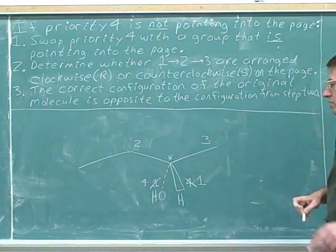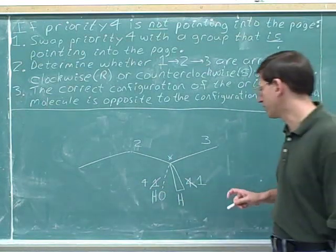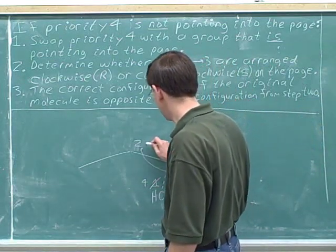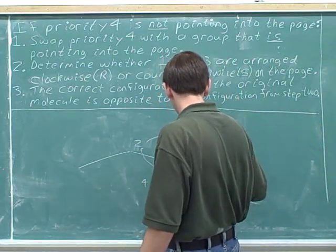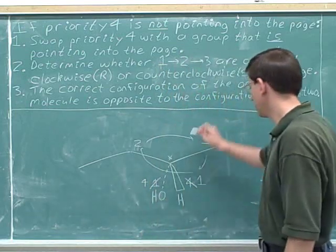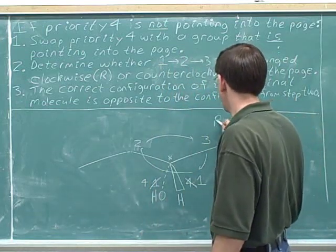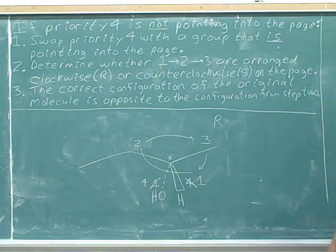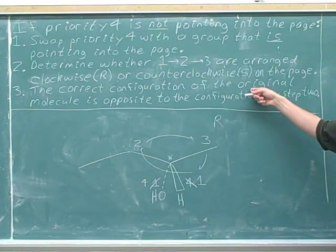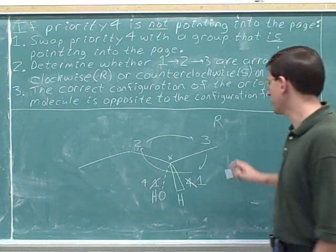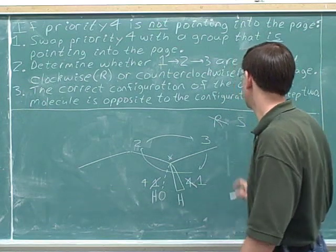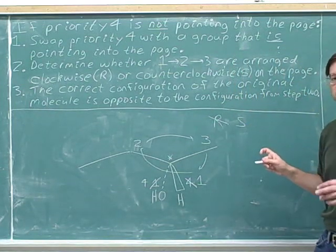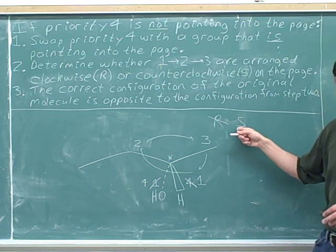Step two: what's the configuration of one to two to three on the page? One to two, two to three, back to one — on the page we have clockwise, so from step two we have R for clockwise. Then step three: before we made the swap, the original configuration must have been S. The correct answer to this problem is that the stereocenter is S.